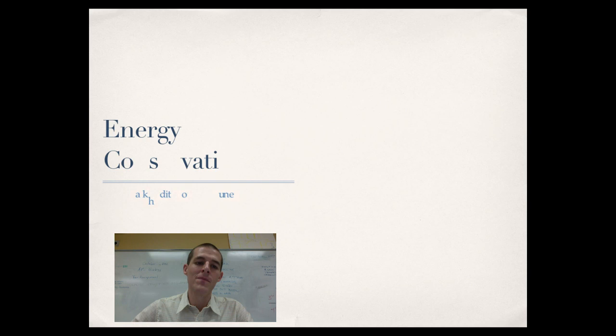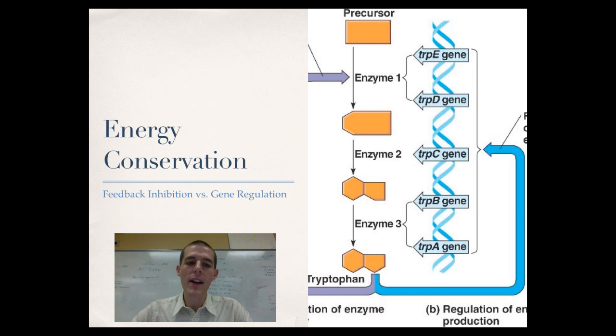All right, as far as control goes, two basic models: feedback inhibition versus gene regulation. We've talked about feedback inhibition. That would be, if I can show you a little diagram, we've talked about metabolic pathways. That's essentially any chemical pathway in your body. Two ways you could go. We've got an enzyme pathway right here.